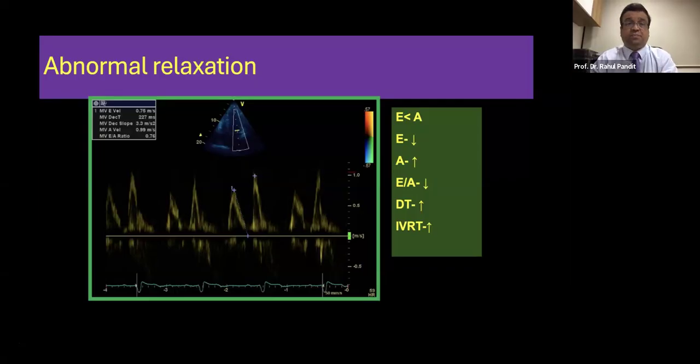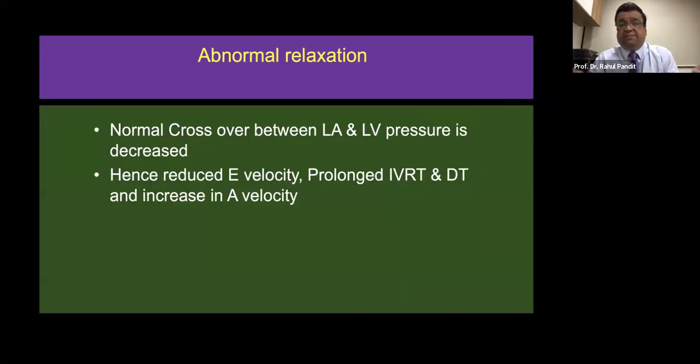If I was to put these same things in the word, the normal crossover between the left atrium and the left ventricular pressure is decreased. Hence there is a reduction in the E wave velocity. There is a prolongation of the isovolumetric relaxation time and deceleration time and obviously the A wave velocity increases. So there is an EA reversal.